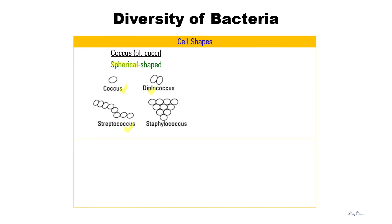Based on their arrangement, the name can be different. If found in single, it is called coccus. If found in pairs, it is diplococcus. The chain form is called streptococcus, and if they are found in a cluster, it is called staphylococcus.